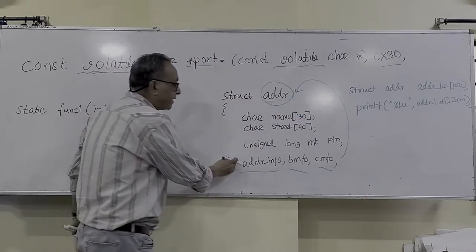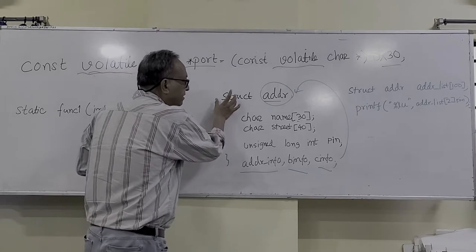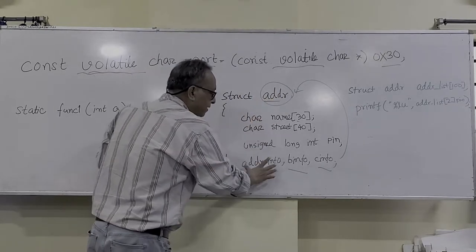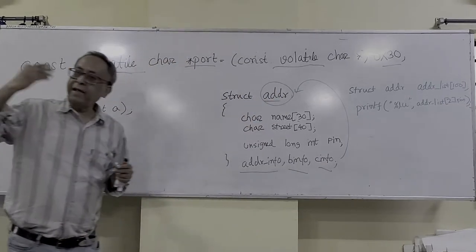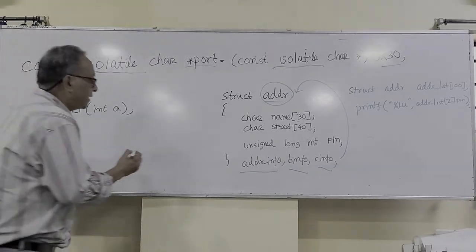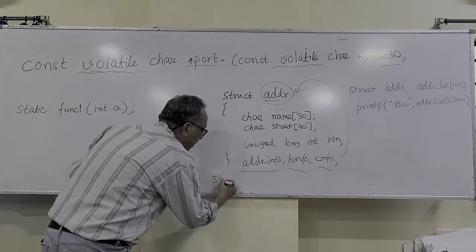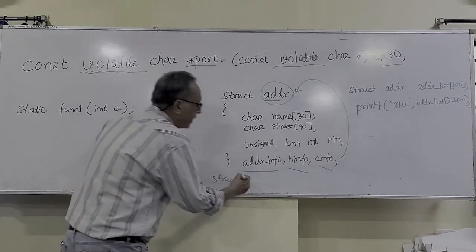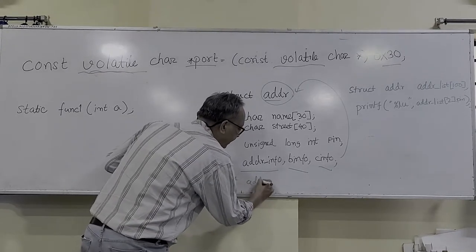You can separately write it like struct addr. You can make another separate line. Like I can make another line like struct addr.